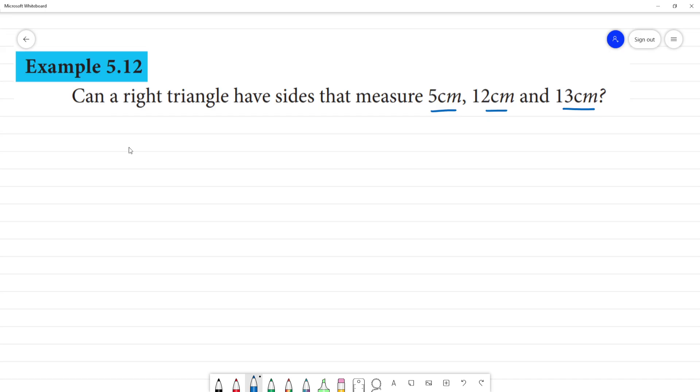By Pythagoras theorem, we know sum of two squares will be equal to the square of the third side.